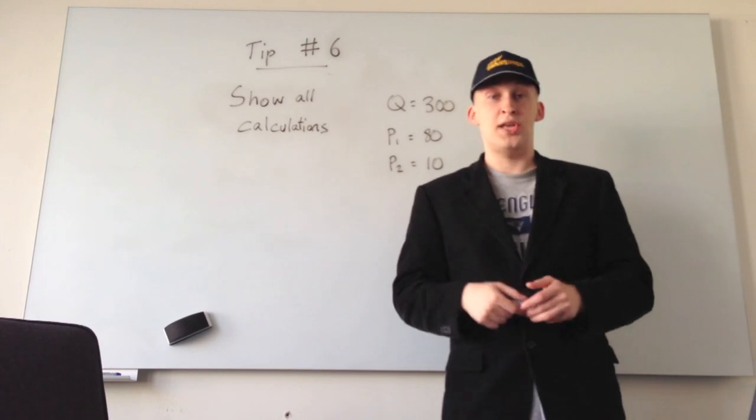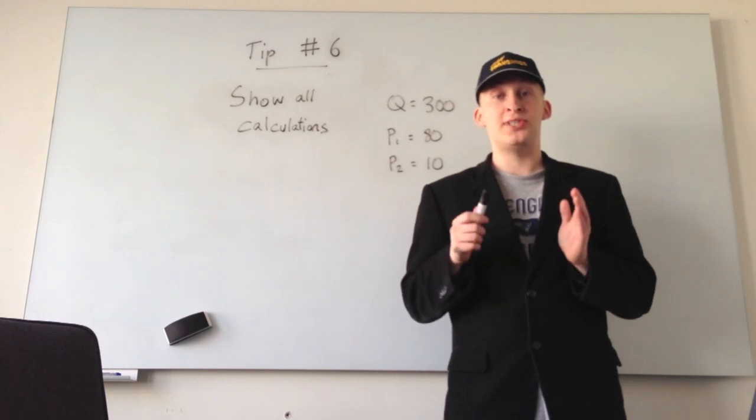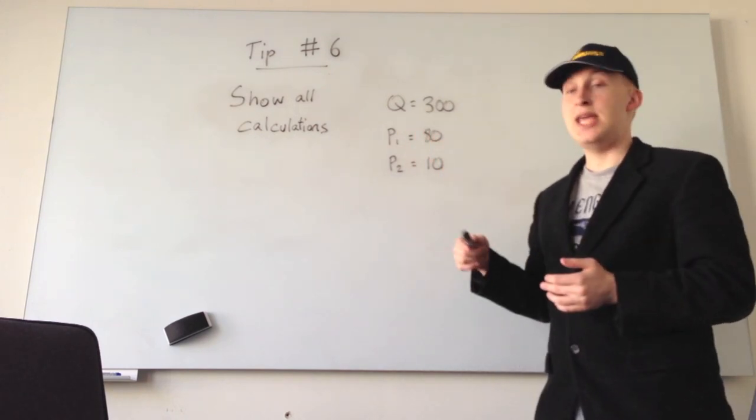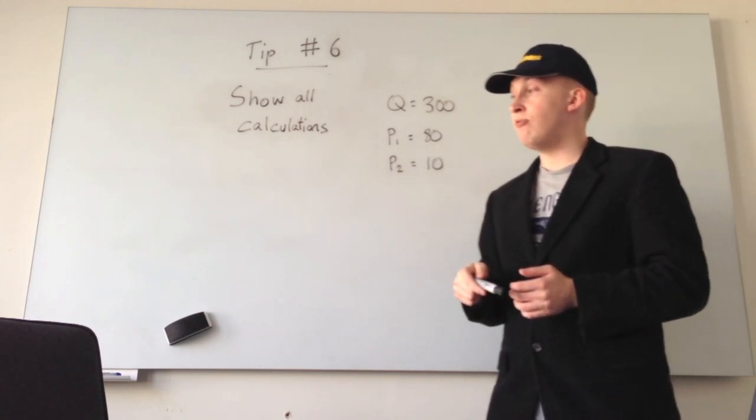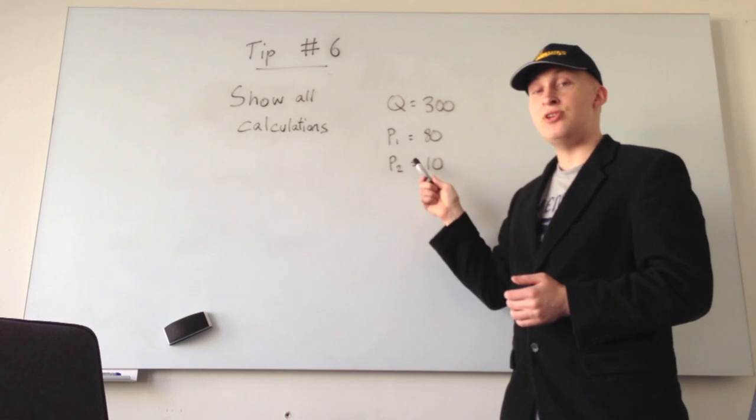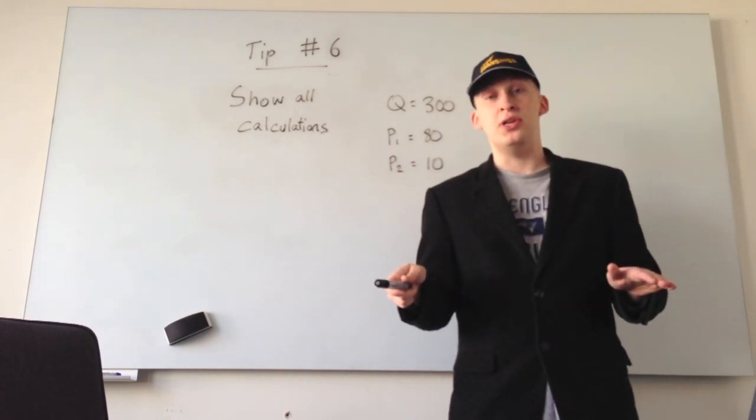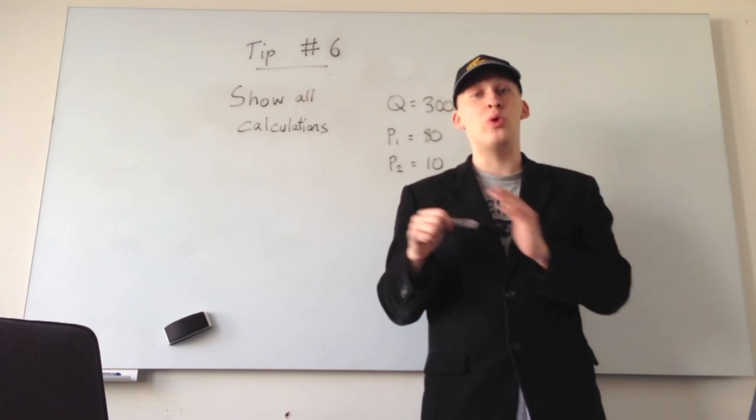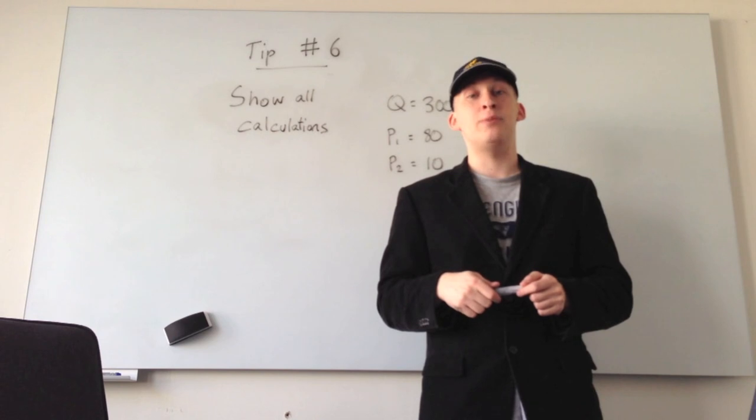Tip number six, show all calculations. If you're given a mathematical example asking you to, for example, find a given quantity and then a given price for company one and company two, and you simply write down what the final answer is, and it's wrong, you will get no points for the question. But if you show how you worked it out, and it's the right method, then you at least get a little bit from it.